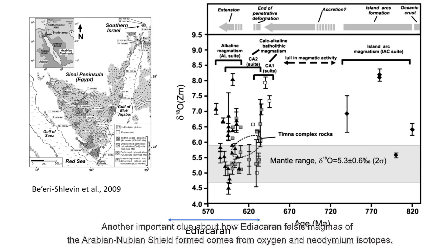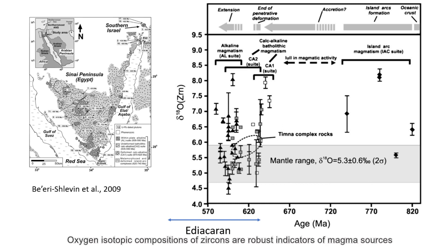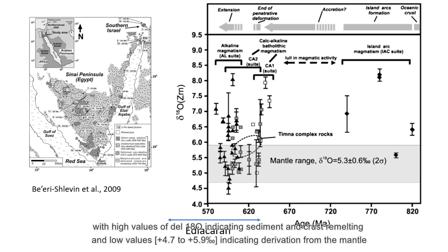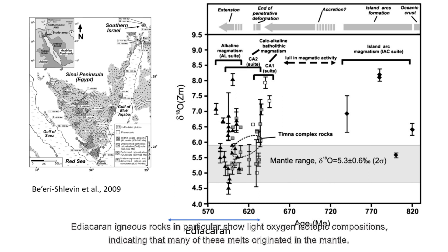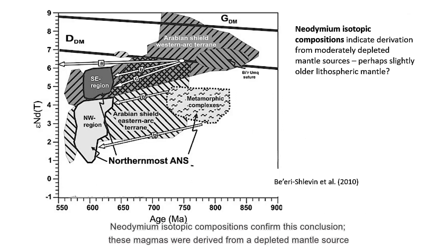Another important clue about how Ediacaran felsic magmas of the Arabian Nubian Shield formed comes from oxygen and neodymium isotopes. Oxygen isotopic compositions of zircons are robust indicators of magma sources, with high values of δ¹⁸O indicating sediment and crust re-melting, and low values of about +4.7 to +5.9 per mil indicating derivation from the mantle. Ediacaran igneous rocks in particular show light oxygen isotopic compositions, indicating that many of these melts originated in the mantle.